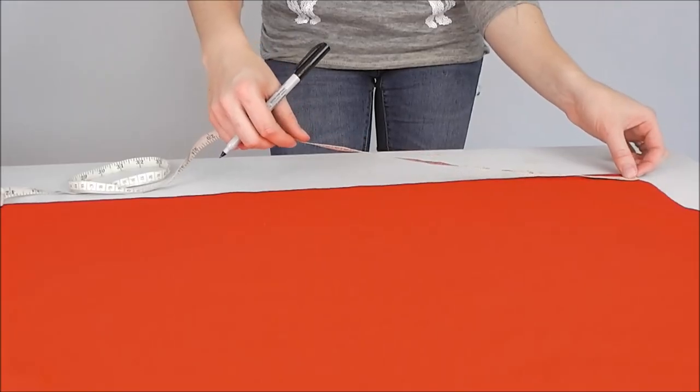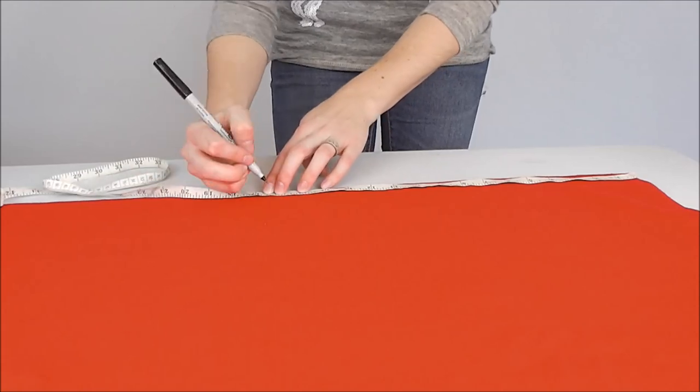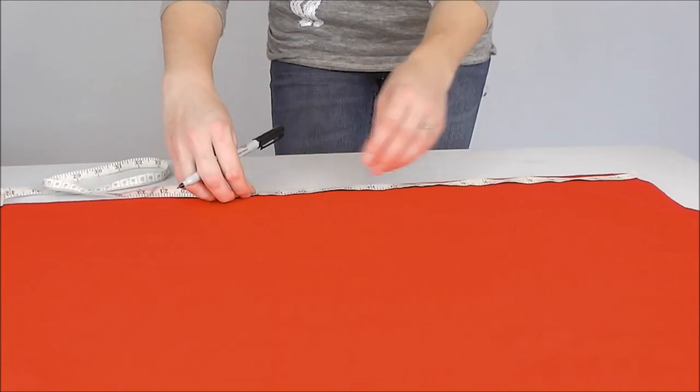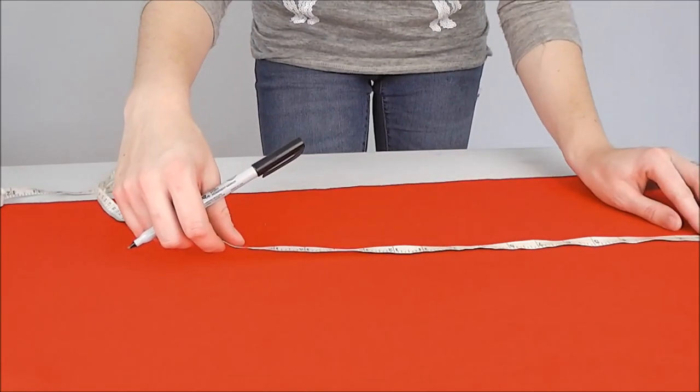On your red felt, measure out your first piece. To your width measurement, add half an inch each side for the seam and leave your height calculation as it measured.